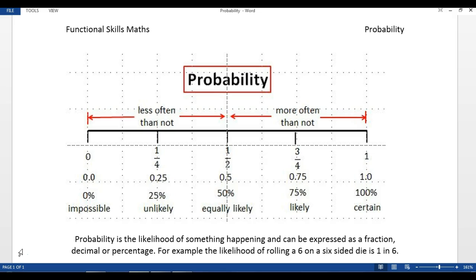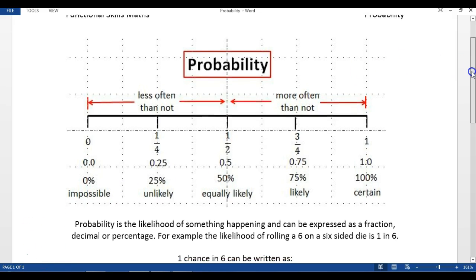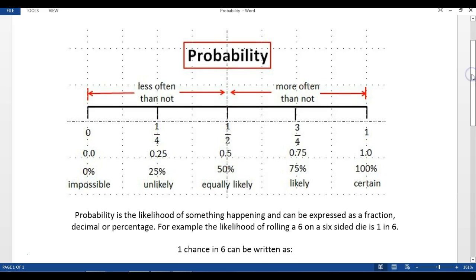Basically what probability is, and there's a short definition on the screen here, is the likelihood of something happening. Probability can be expressed as a fraction, a decimal, or a percentage. For example, the likelihood of rolling a six on a dice would be one in six.